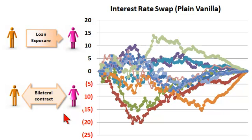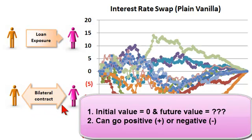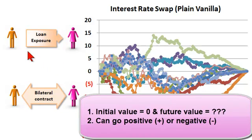Now there are two key challenges that introduce complexity into counterparty risk under the derivative scenario. First, what is the value or exposure on day zero? This is a fair deal between the two counterparties, so typically it's priced so that the value is zero to both of them. The current exposure on day zero is pretty much zero. And going forward in time, the value can go positive or negative to either counterparty. So the future exposure is not only highly uncertain, but it can go in either direction.